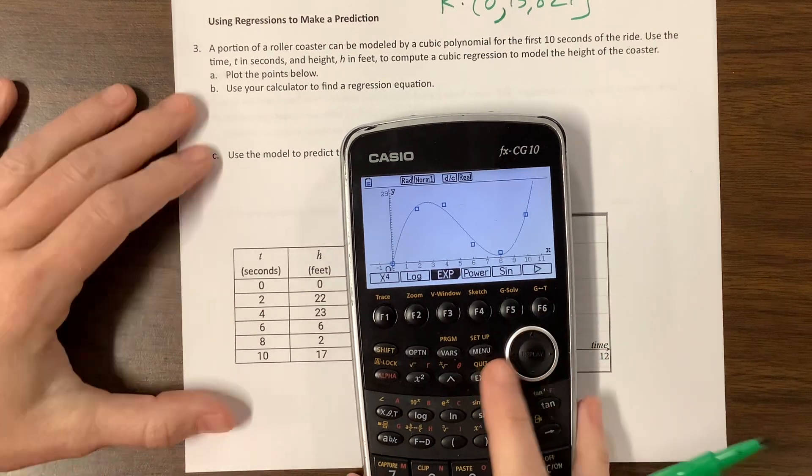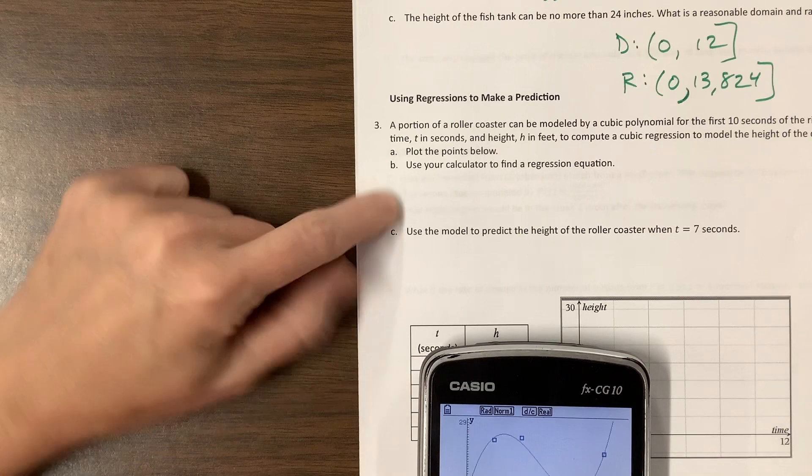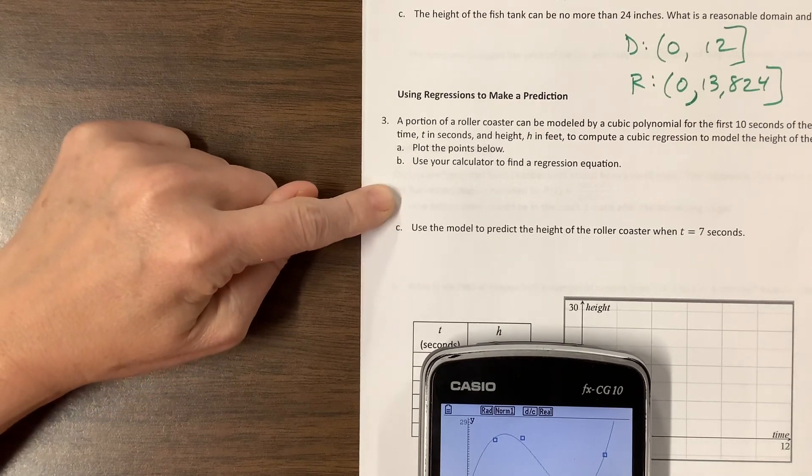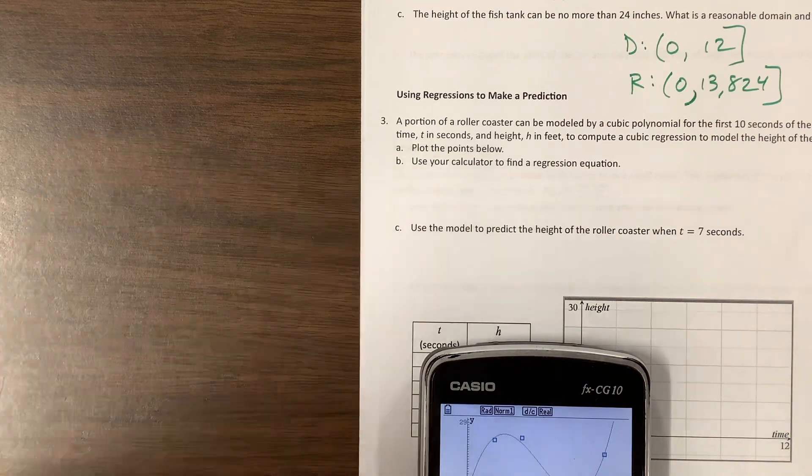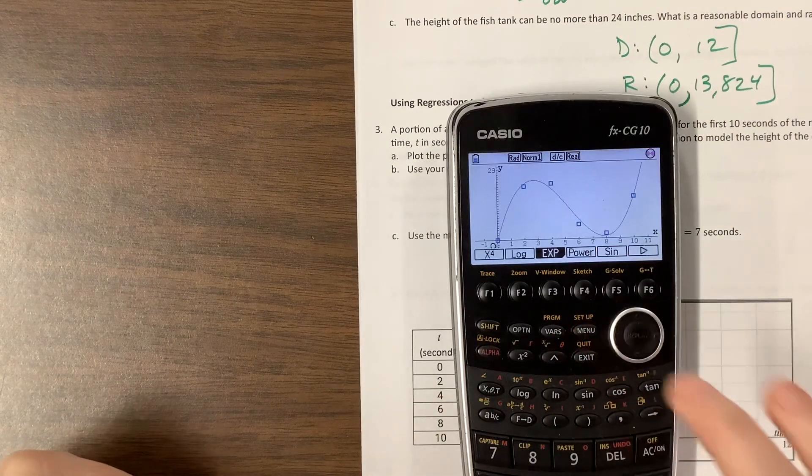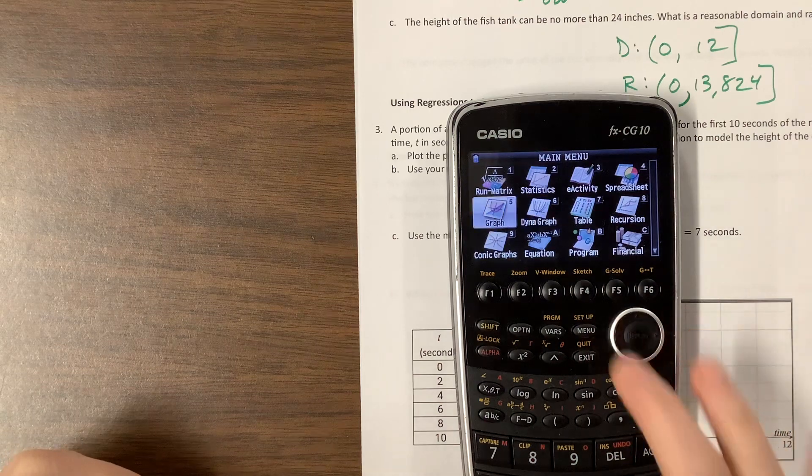Now here's the cool part. Okay, so it says use your calculator to find a regression equation. And I wrote them out. I think I let f of x be my cubic, and I let g of x be my quartic. And then what I'm going to do is I'm going to come back to my graph.